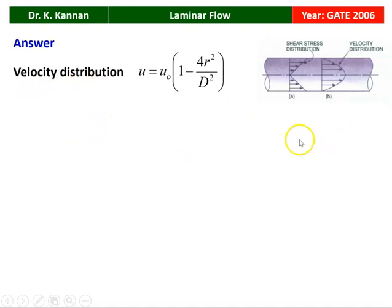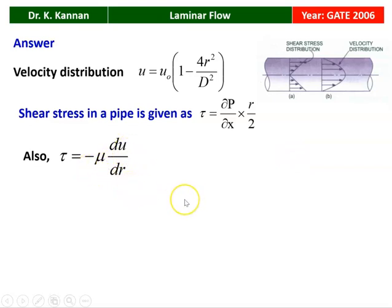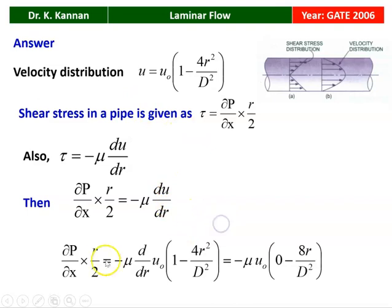This is the velocity distribution for a pipe of uniform diameter: U = U₀(1 − 4r²/D²) as given in the problem. The shear stress in the pipe is given by τ = (∂P/∂x)(r/2). The shear stress is also given by −μ(du/dr). So there are two expressions for shear stress — one in terms of pressure gradient and one in terms of velocity gradient. We take the two equations as equal.